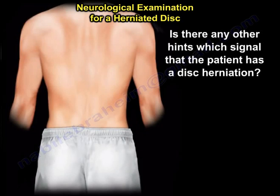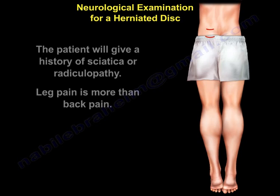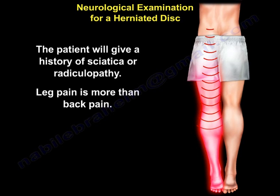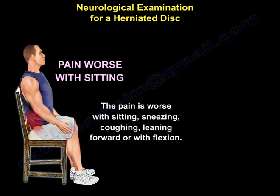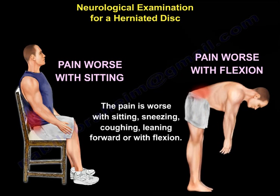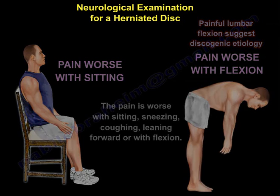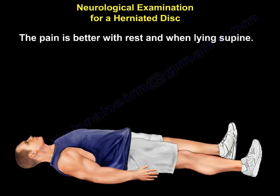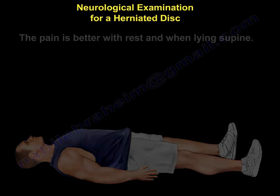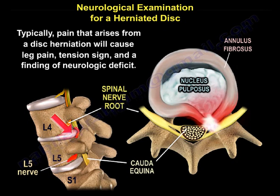Other clinical hints that signal disc herniation: the patient will give a history of sciatica or radiculopathy, with leg pain greater than back pain. The pain is worse with sitting, sneezing, coughing, leaning forward, or with flexion. Painful lumbar flexion suggests discogenic etiology. The pain is better with rest and lying supine. Typically, pain arising from a disc herniation will cause leg pain, a positive tension sign, and neurological deficit findings.